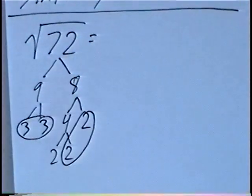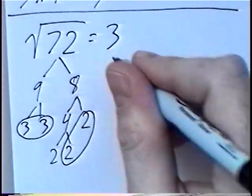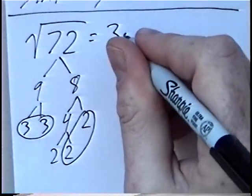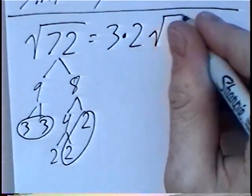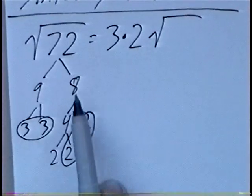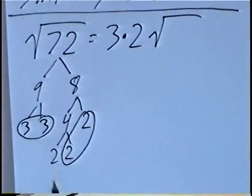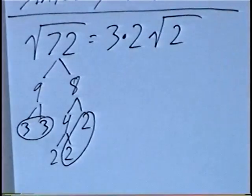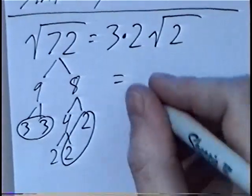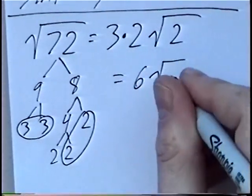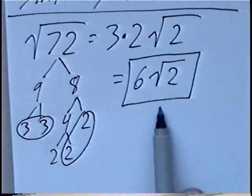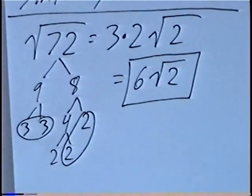For the square root of 72, anytime you circle a pair, that number goes outside the square root or radical. If you have two pairs, we can multiply those together: 3 times 2. Inside the square root are the single numbers at the end of the factor tree, which in this case would be a 2. Multiplying the outside numbers would be 6, so our final answer is 6 radical 2.